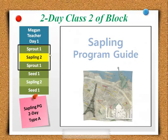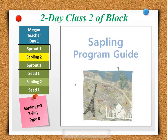We know what components we'll be teaching Sprout 1, but we still need to find what components we'll be teaching Sapling 2. So to do that, we want to get out our Sapling Program Guide, and we already have it labeled from before. Sapling 2 is going to be a Type B class.